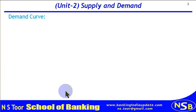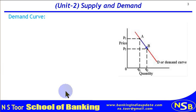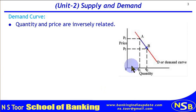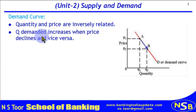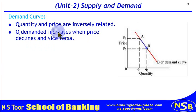Now, the demand curve. We have just seen the demand schedule; now we shall see the demand curve. According to this curve, quantity and price are inversely related. The law of demand says if there is an increase in price, the quantity demanded shall decline. Quantity demanded increases when price declines, and when price increases, quantity demanded decreases.